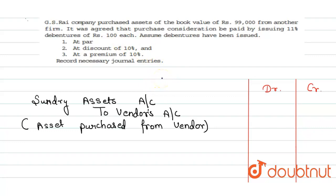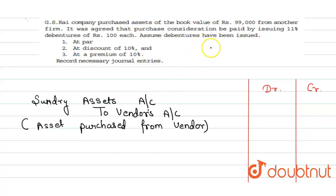Okay, so let's get started. We have a question. GS Rai company purchased assets of the book value of Rs. 99,000 from another firm. It was agreed that the purchase consideration be paid by issuing 11% debentures. So we have a question about debenture's value.